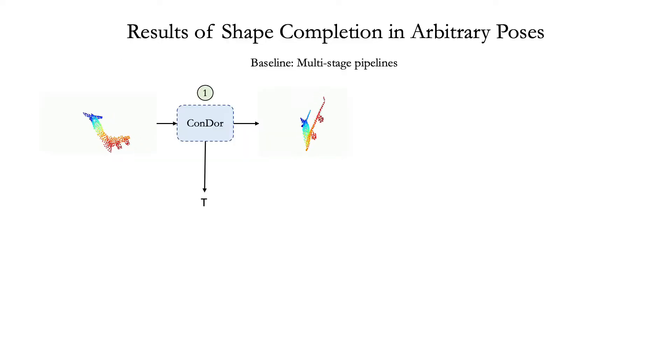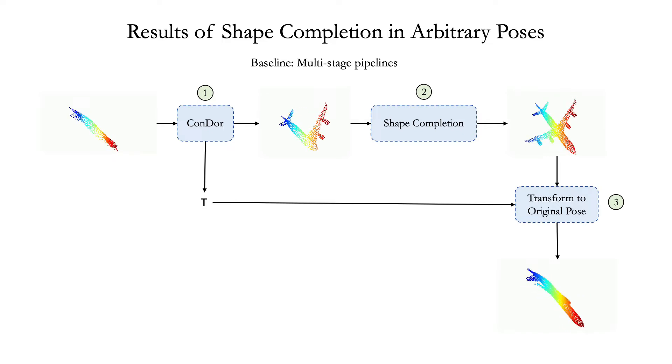Our baseline is a multistage pipeline that first uses Condor to canonicalize the partial inputs, completes the shape in this canonicalized form, and then transforms the output back to the original pose using Condor's predicted transform.